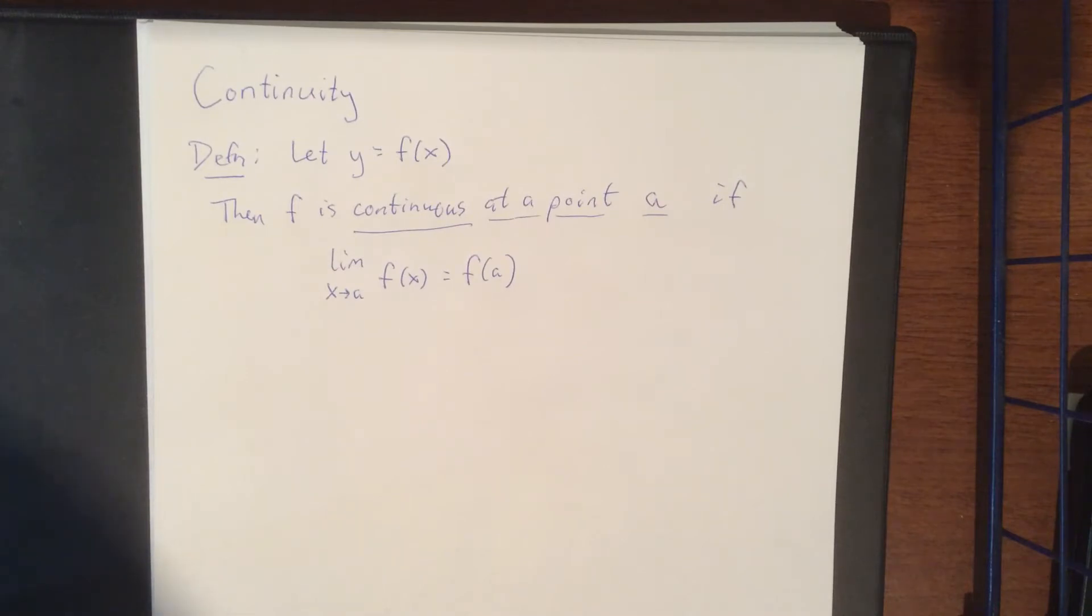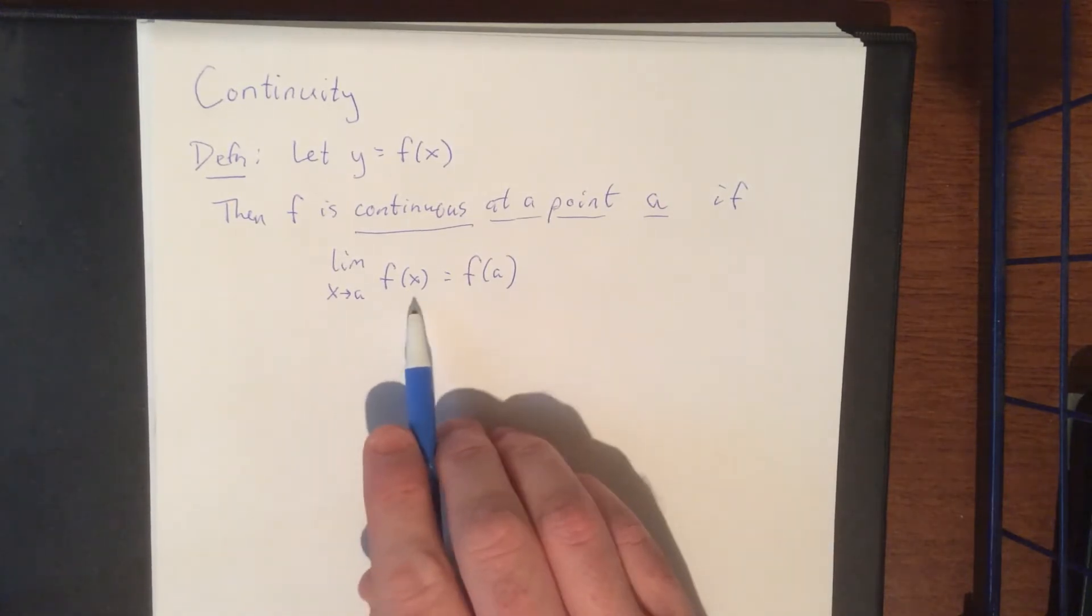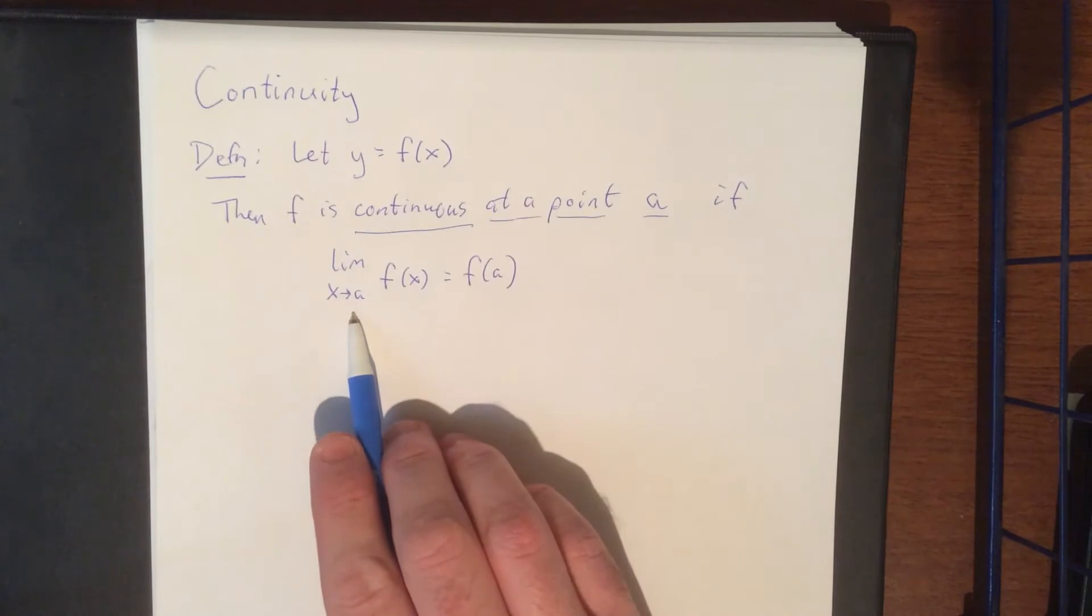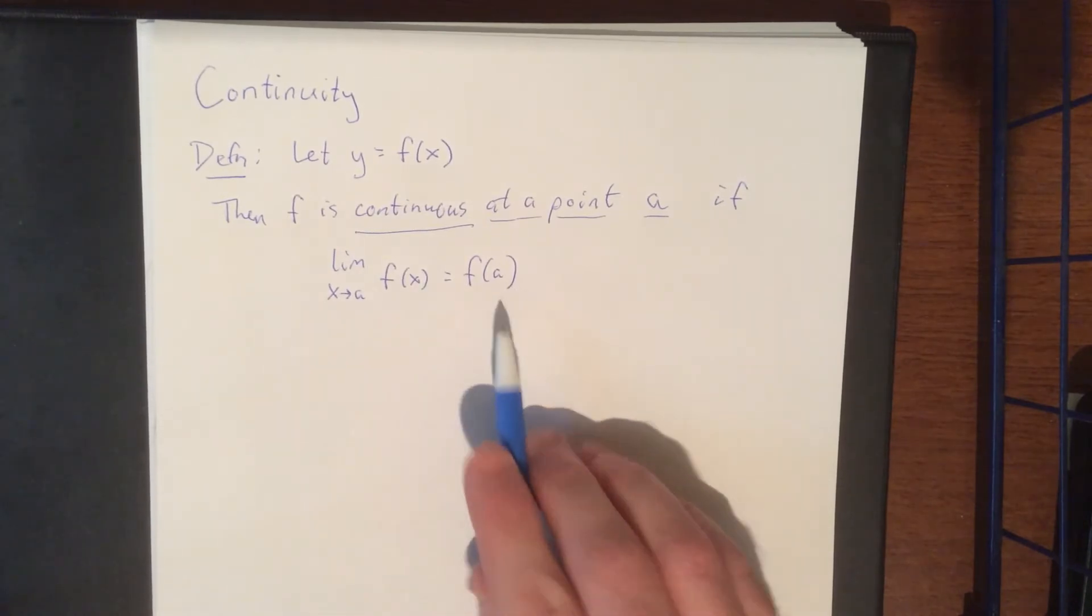Now this is actually several different statements and we're going to break those statements down. You'll notice that on the left-hand side what we have is a limit as x approaches a of f of x, and on the right-hand side what we have is simply a plugged into a function.